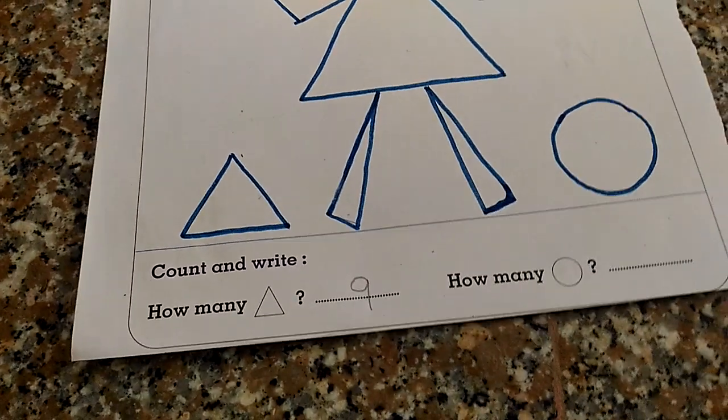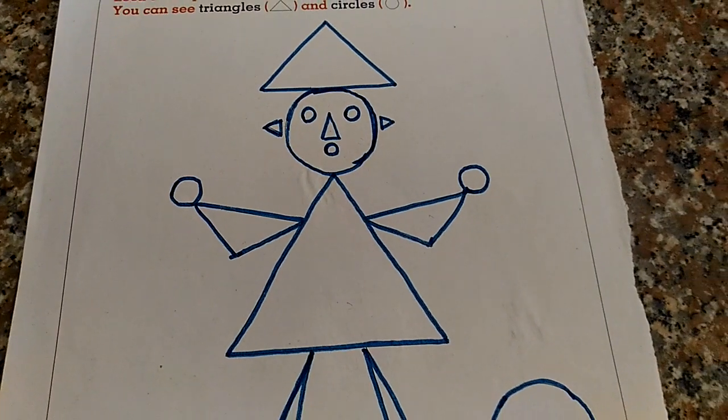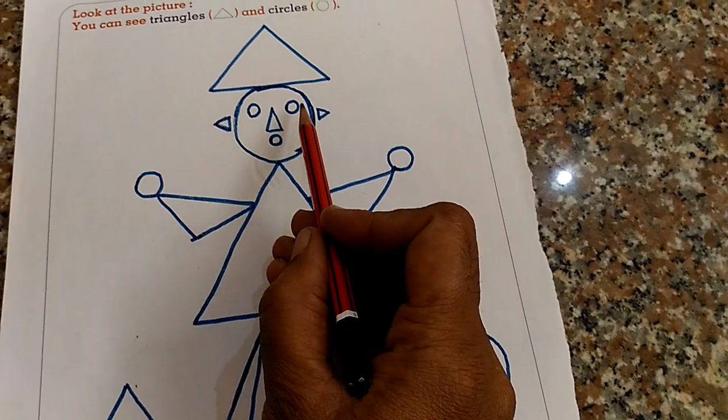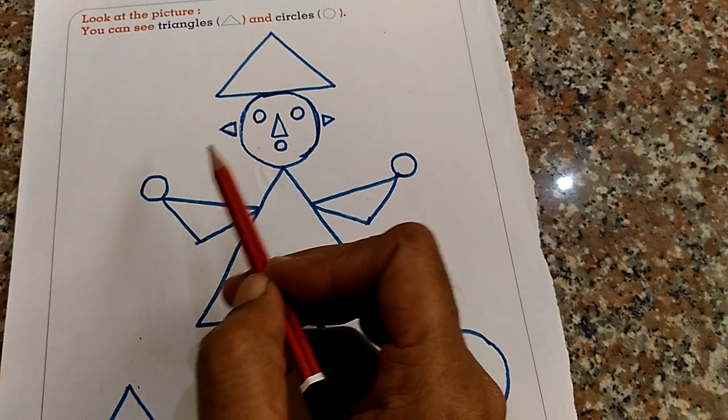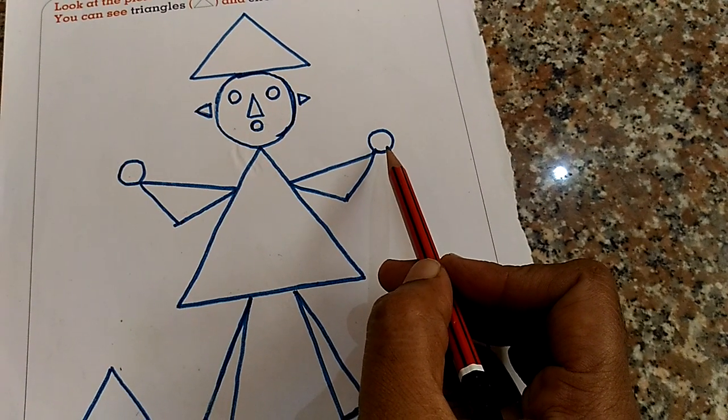How many circles here? Count it. 1, 2, 3, 4, 5, 6. How many circles?